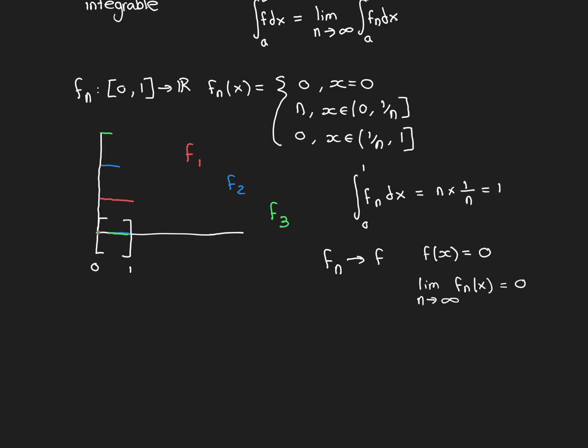Let's now think about whether this sequence of functions has a limit. I claim that it does, and the limit is the zero function everywhere: fn converges to f where f maps x onto 0 for all x in [0,1]. Intuitively, as you progress, the amount of the domain being mapped onto zero approaches the entire domain. More formally, at x=0: all functions map 0 onto 0, so the pointwise sequence is all zeros, and its limit is zero.